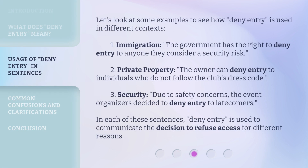Let's look at some examples to see how 'deny entry' is used in different contexts. 1. Immigration: The government has the right to deny entry to anyone they consider a security risk. 2. Private property: The owner can deny entry to individuals who do not follow the club's dress code. 3. Security: Due to safety concerns, the event organizers decided to deny entry to latecomers. In each of these sentences, 'deny entry' is used to communicate the decision to refuse access for different reasons.